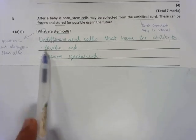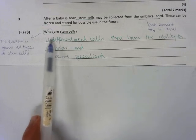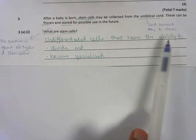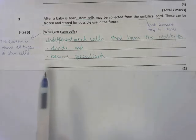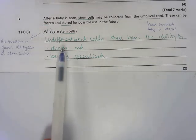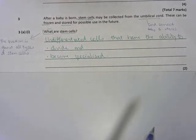Undifferentiated cells, or you can use the word unspecialized, that have the ability to... And remember, all stem cells can do two things. They can divide and they can become specialized. If you said any of these two points, you can get two marks.